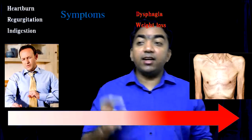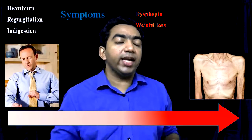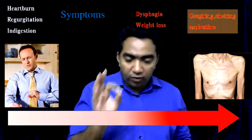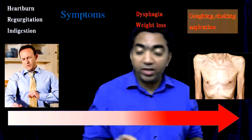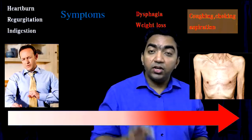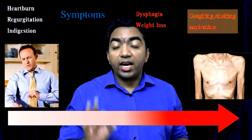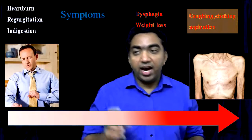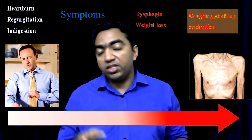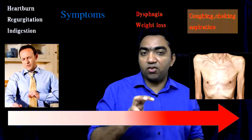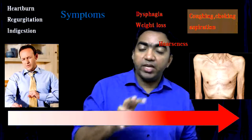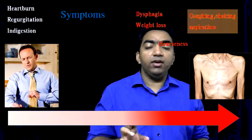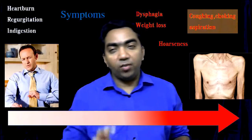Another late symptom is coughing, choking, and aspiration. When these occur alongside dysphagia in carcinoma esophagus, you should always suspect a tracheoesophageal fistula. Another important sign is hoarseness of voice, which indicates involvement of the recurrent laryngeal nerve by carcinoma esophagus.